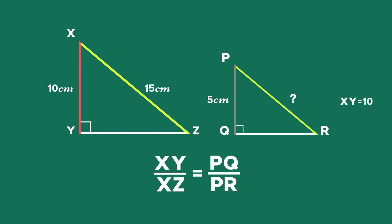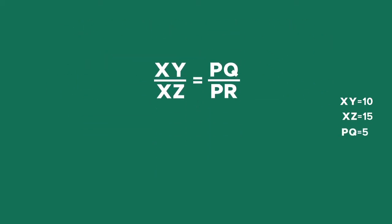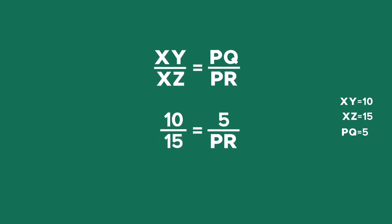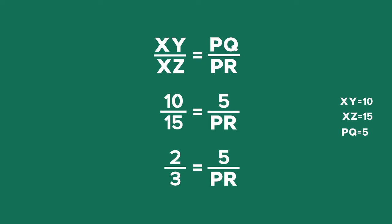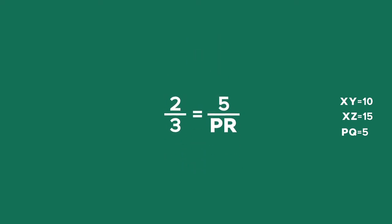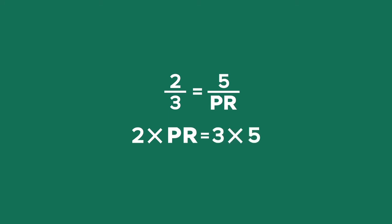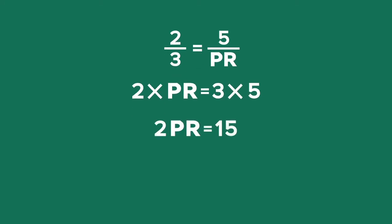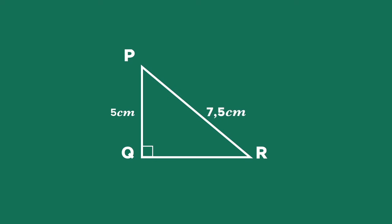We know the lengths of XY, XZ and PQ, so we can substitute the given values in the equation. We get 10 divided by 15 equals 5 divided by PR. Simplify the fraction by dividing by 5. So we get 2 divided by 3 equals 5 divided by PR. We have a single fraction on each side of the equal sign. So we can use cross multiplication to simplify. 2 times PR equals 3 times 5. So 2 times PR equals 15. And dividing both sides by 2, we get PR equals 7.5. So the length of PR equals 7.5 centimeters.